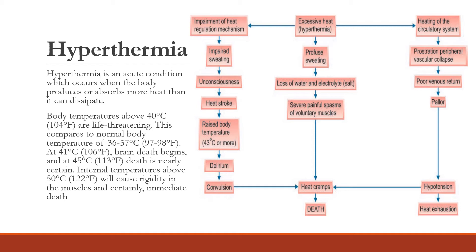Heat exhaustion of the circulatory system means peripheral vascular collapse — the limbs, face, legs, and hands have very less circulatory functioning. Poor venous return means deoxygenated blood does not reach the heart on time, leading to hypotension, pallor, and heat exhaustion. So three important things to remember in hyperthermia are: heat stroke, heat cramps, and heat exhaustion.